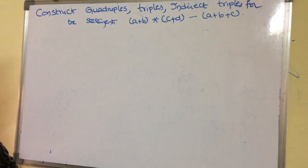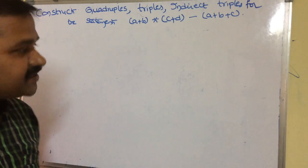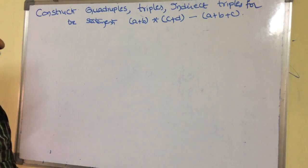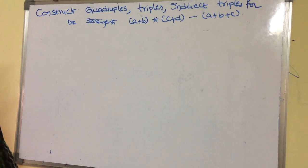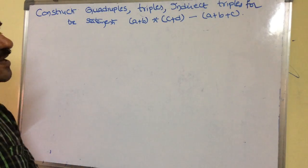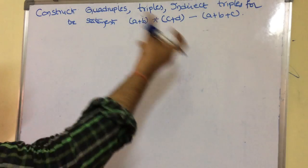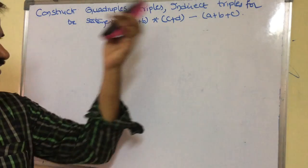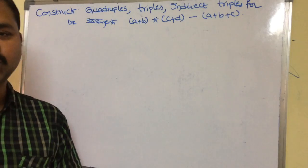Now let's see this example. Construct quadruples, triples, and indirect triples for the statement: a plus b star c plus d minus a plus b plus c. First we have to represent this equation, this instruction in the form of a three address code.